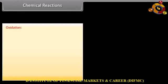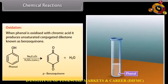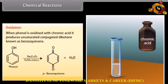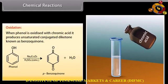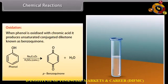Oxidation: when phenol is oxidized with chromic acid, it produces an unsaturated conjugated diketone known as benzoquinone.